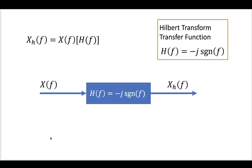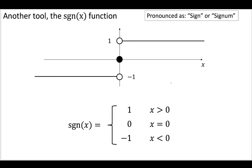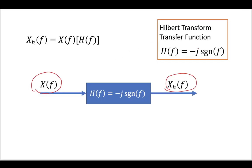From a systems perspective, we have some signal going into a Hilbert transformer. The Hilbert transformer has this transfer function, and our output is the Hilbert transformed function. Going back to our signum tool, this was our original definition of signum x. Now we have our Hilbert transform, which is -j signum of x.